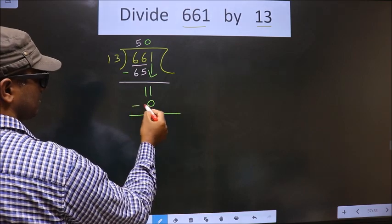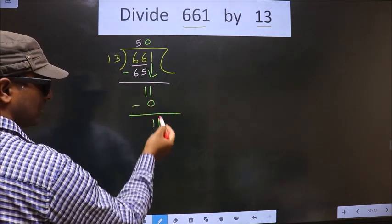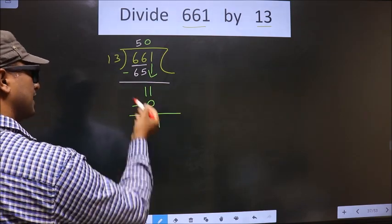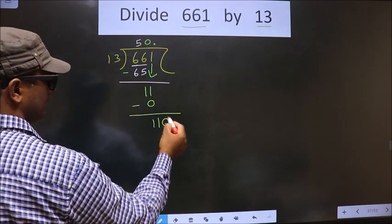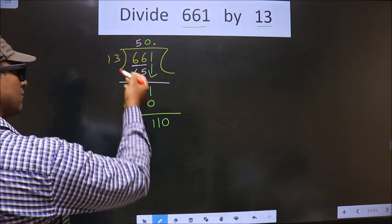Now you subtract: 11 minus 0 is 11. Here you did not bring any number down. Now 11 is smaller than 13, so now you take decimal and take 0 here.